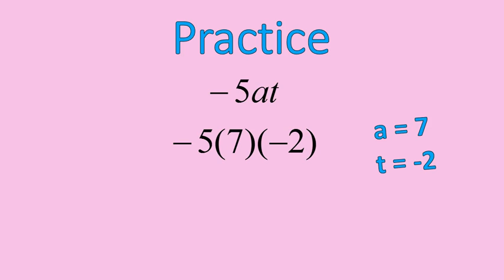a is 7, t is negative 2. Negative 5 times positive 7 times negative 2. Negative 5 times positive 7 gives me negative 35. Times negative 2 gives me a positive 70. That's how we solve this.